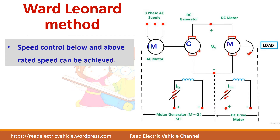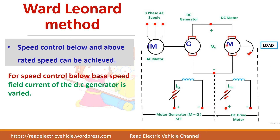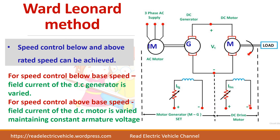Instead of a rheostat, this generator does the function of providing the supply voltage for the motor. If I control the generator output voltage, I can control the voltage applied to the motor. The generator needs mechanical input and gives electrical output. This is the generator field winding and this is the motor field winding. For speed control below base speed, you have to control the field current of the DC generator. For above base speed, the field current of the DC motor can be varied.